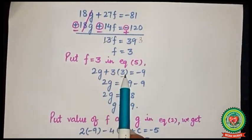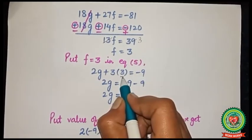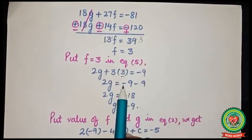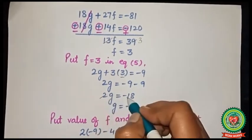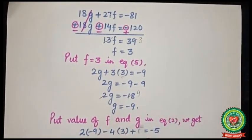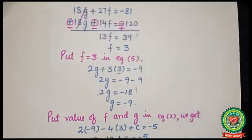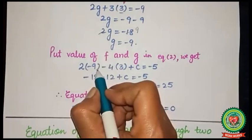Substituting f = 3 into equation number 5: 2g + 3(3) = -9, so 2g + 9 = -9, giving 2g = -18 and therefore g = -9.